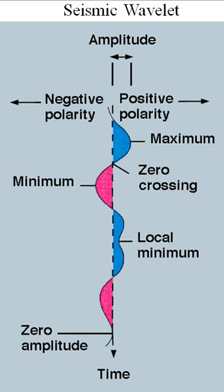There are a number of ways of defining a wavelet. An orthogonal wavelet is entirely defined by the scaling filter, a low-pass finite impulse response filter of length 2N and sum 1. In biorthogonal wavelets, separate decomposition and reconstruction filters are defined. For analysis with orthogonal wavelets the high-pass filter is calculated as the quadrature mirror filter of the low-pass, and reconstruction filters are the time reverse of the decomposition filters. Daubechies and Symlet wavelets can be defined by the scaling filter.